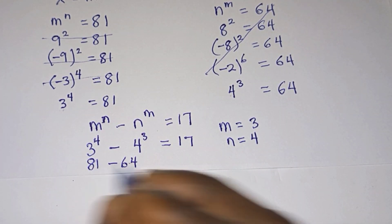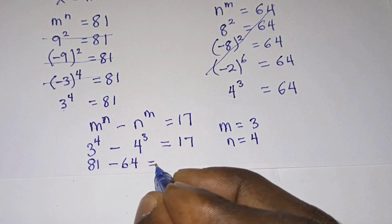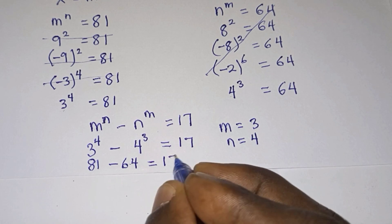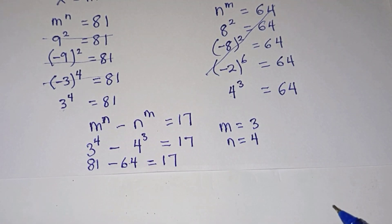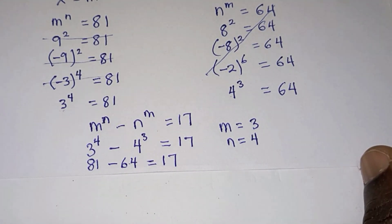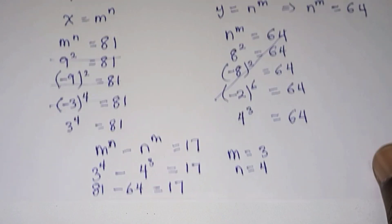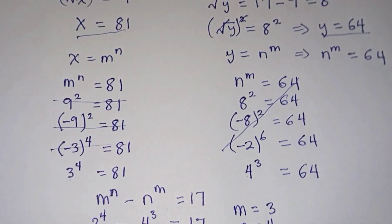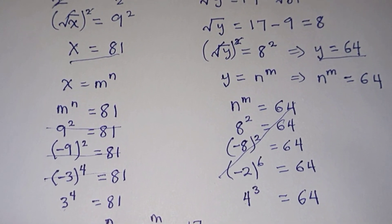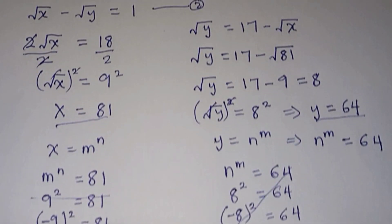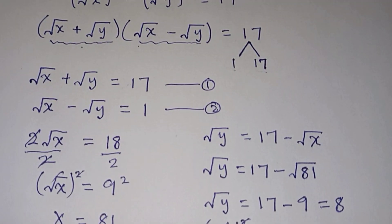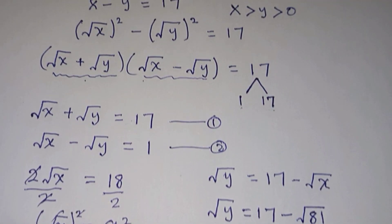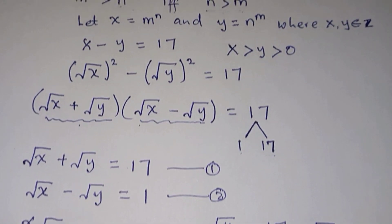Let's verify: 3 to the power 4 is 81, minus 4 to the power 3 which is 64, and 81 minus 64 gives us 17 — the correct answer. If you found this video useful, subscribe to my channel for more videos. Thanks for watching, give this video a like, and see you in the next video. Take care, bye!